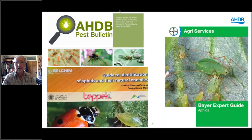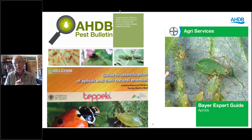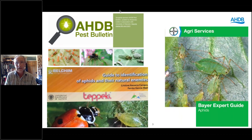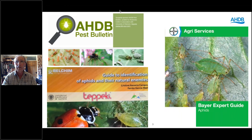Also identification guides. The AHDB pest bulletin is a regular update on what's going on. A lot of it is on the agricultural side, but when it comes to aphids it will mention scientific names like Myzus persicae, which goes onto a lot of horticultural and ornamental crops. It is worth looking at to tell you when aphids are flying and when they're likely to come into your crops.